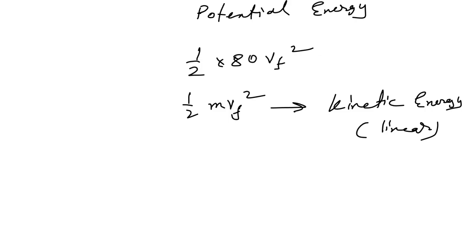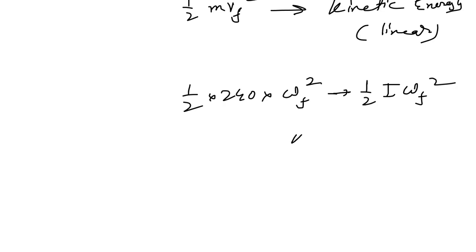With that you have an additional expression of half times 240 times omega f square. Again this resembles half I omega f square, where I is the moment of inertia. Clearly that's again kinetic energy which is rotational.